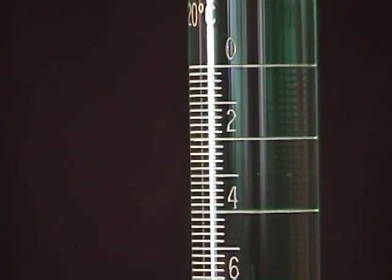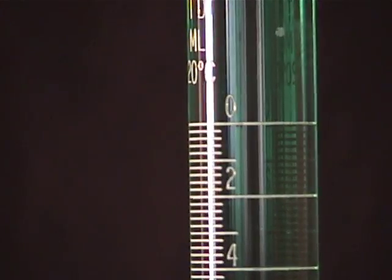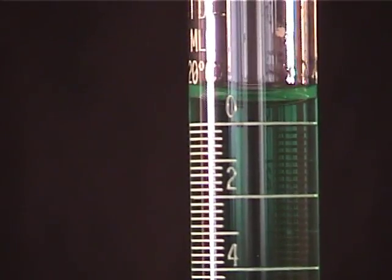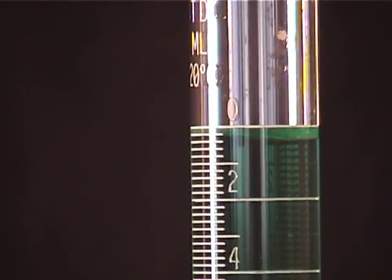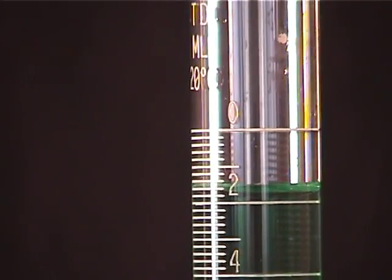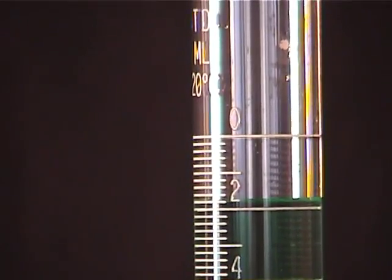To avoid parallax error, your view line also must be absolutely horizontal. Adjust the initial reagent level to anywhere between 0 to 2 milliliters. Hold your finger or a white piece of paper behind the burette to facilitate the reading and read from the bottom curve of the meniscus, estimating the hundredths place.